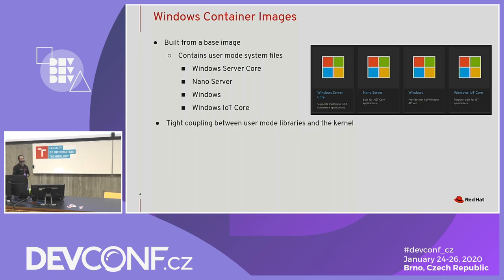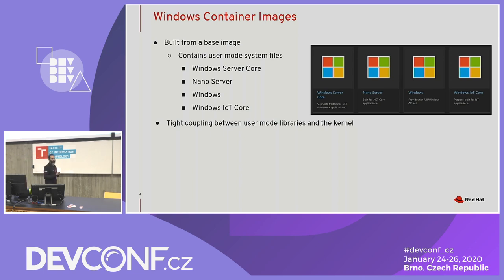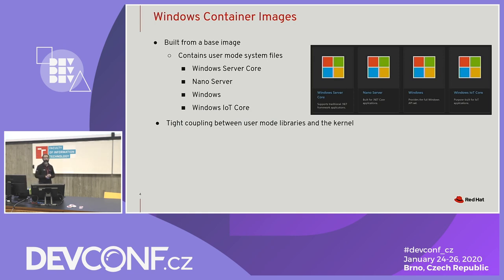The reason for all this is there's a very tight coupling between the user mode DLLs and the kernel. To make things worse, that ABI is not public and not stable. There's a lot of reverse engineering that happens to discover those ABIs. Microsoft gives no guarantees they'll honor those ABIs since you're not supposed to use them directly. So you have to be careful about which image you pick when containerizing your application.